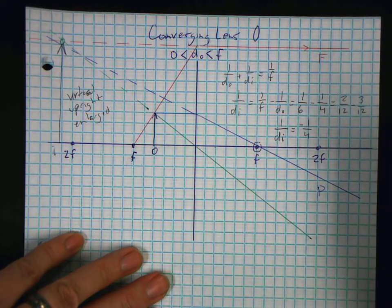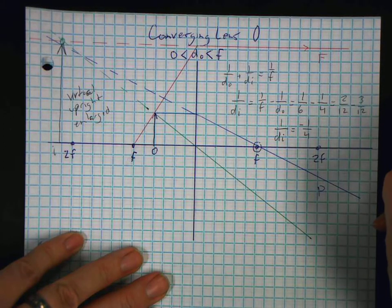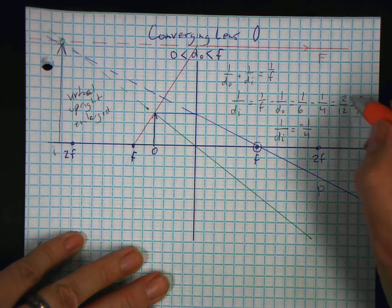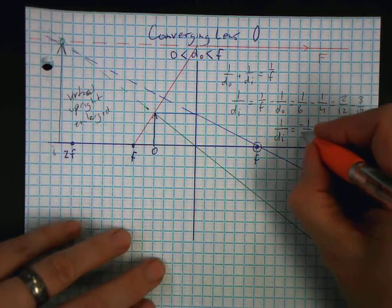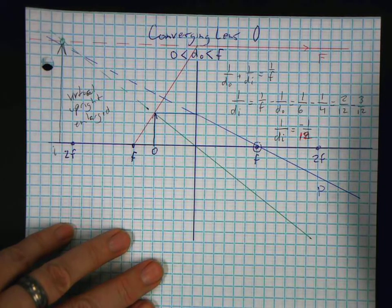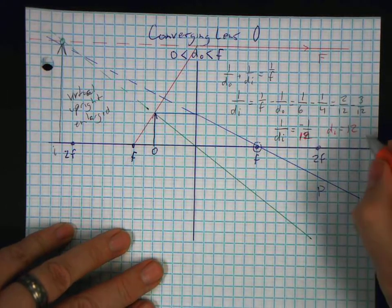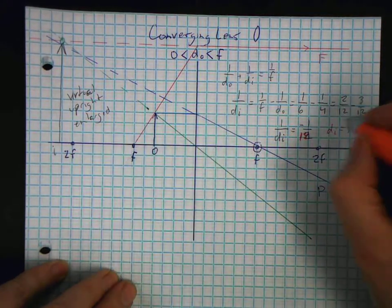Wait a minute — something just went wrong there. One-sixth minus two-twelfths minus three-twelfths gave me negative one-twelfth. So the distance to my image is equal to negative twelve, which is exactly twice my focal length. So it should actually have been there, and it was a negative twelve, meaning it is on the virtual side.